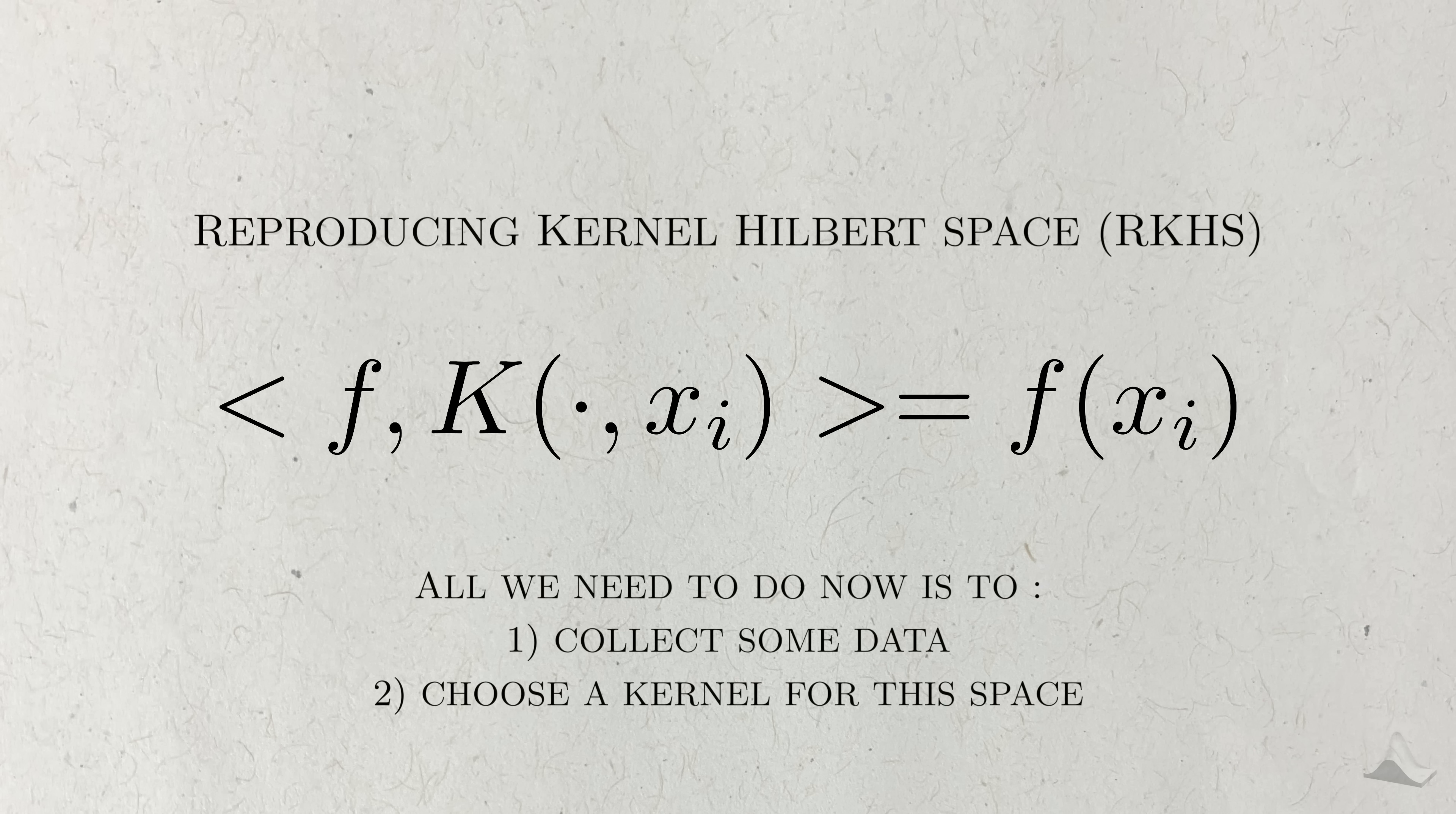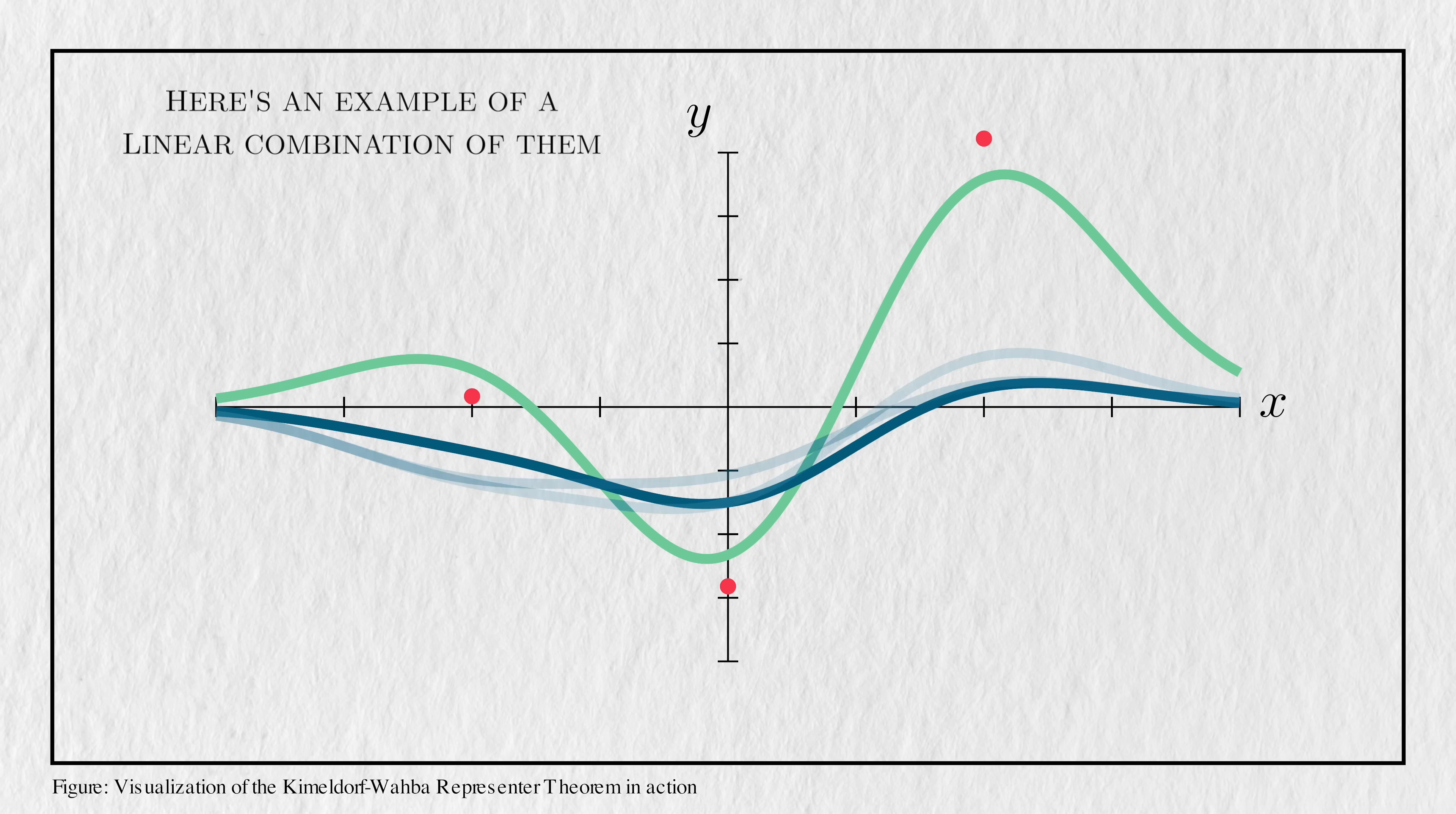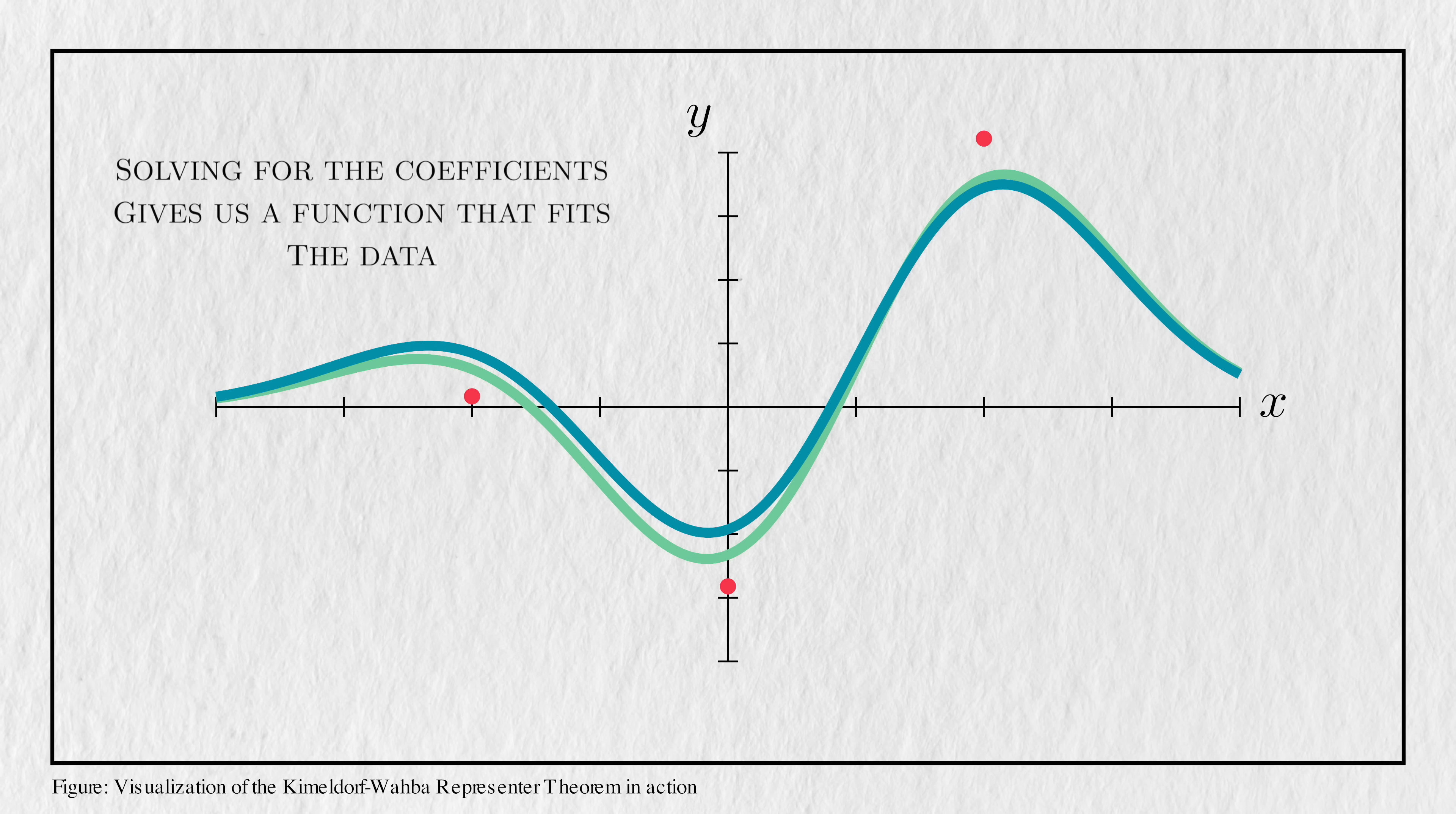So to estimate the function, all we need is data and to choose a kernel. Back to our visualization, we're going to take each of our observations and put it in a kernel function. There are lots of different kernel functions we can use, but the one I'm going to use is called the Gaussian kernel. According to the Kimeldorf representer theorem, the true underlying function can be estimated as a linear combination of these kernel functions. This may be hard to see with the kernel functions in their current form, but this is what we get when we actually add them up in a linear combination. Playing around with the coefficients gives us different curvy functions. So minimizing the penalized least squares leads to the coefficients that would lead us to get an optimal fit based on the data we saw.